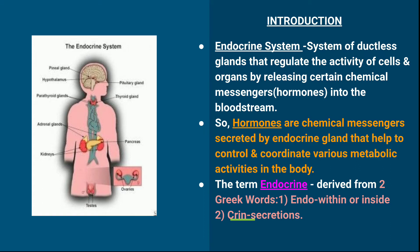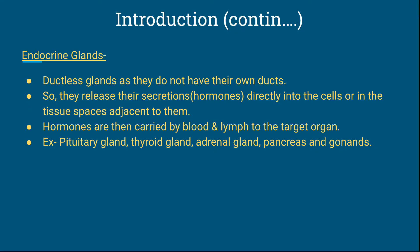From the picture, you can see that the endocrine system has different types of endocrine glands present in our body. These ductless glands release secretions or hormones directly into the cells or tissue spaces adjacent to them where blood is flowing. These hormones come in contact with the bloodstream and are then carried by the blood to the target organ.